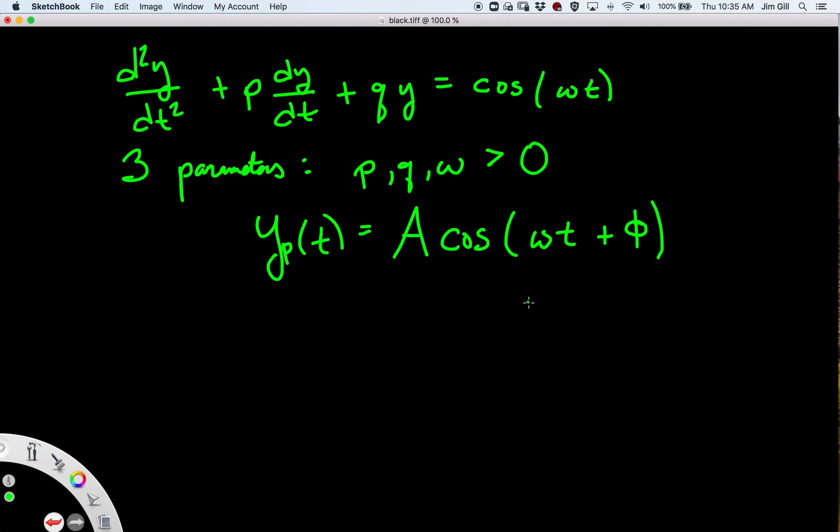Our A of course is the amplitude of our solution, and this phi is called the phase angle, and this is sometimes called the steady state solution.